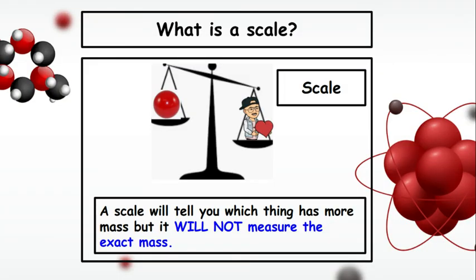What is a scale? Now here's a picture of a scale. You've seen these before. It's got two pans on it. You place one object on one side, another object on the other side. The heavier one with the greatest mass will drop lower. And so this is what a scale does. Now here's the difference between a scale and a triple beam balance. A scale will tell you which thing has more mass, but it will not measure the exact mass in terms of grams. For that, you would need a more sophisticated instrument like a triple beam balance, which gives you the exact grams.